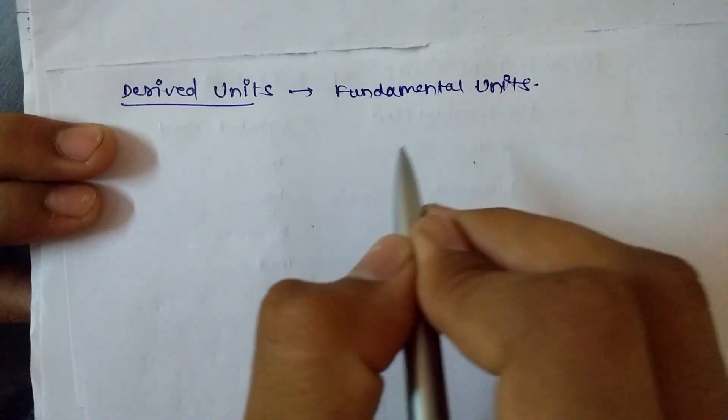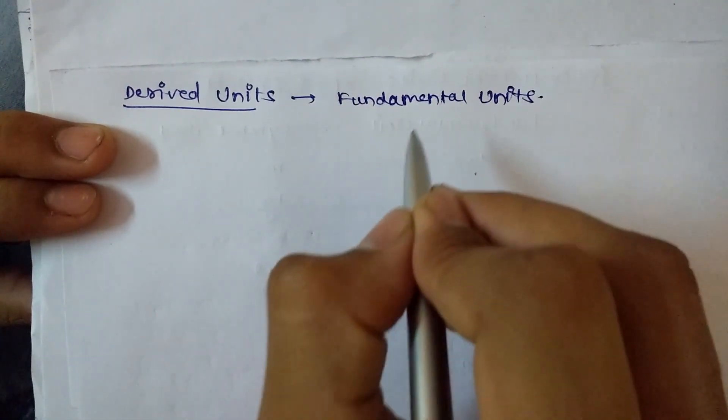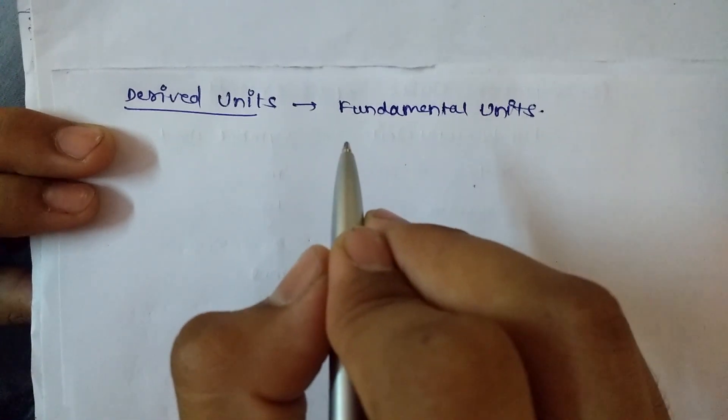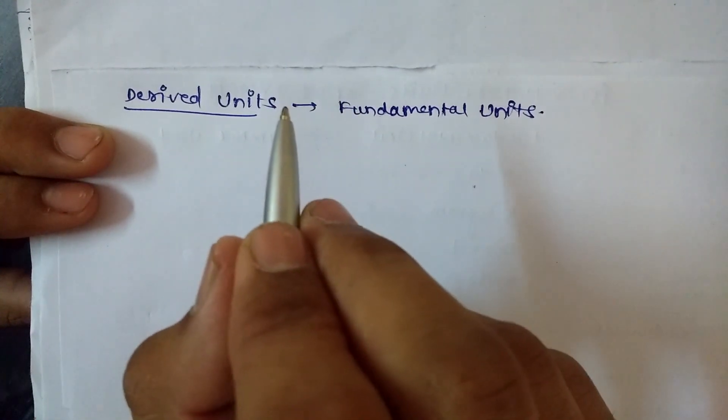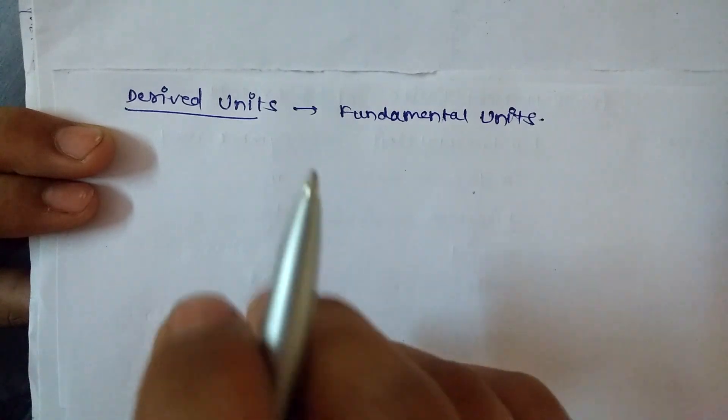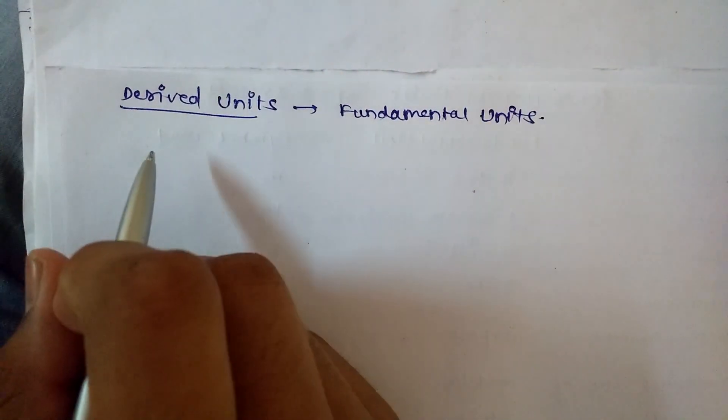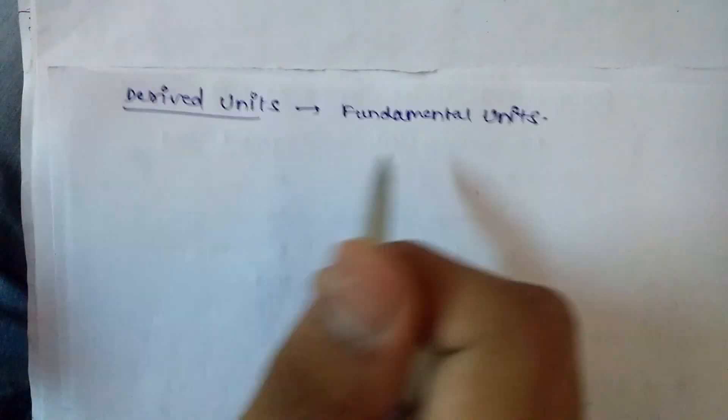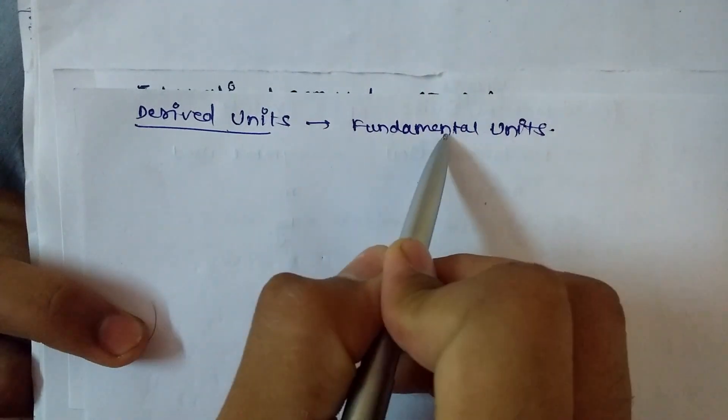We don't count them as fundamental units because fundamental units are independent—they are not dependent on each other. Derived units are dependent on fundamental units; they are derived from fundamental units.